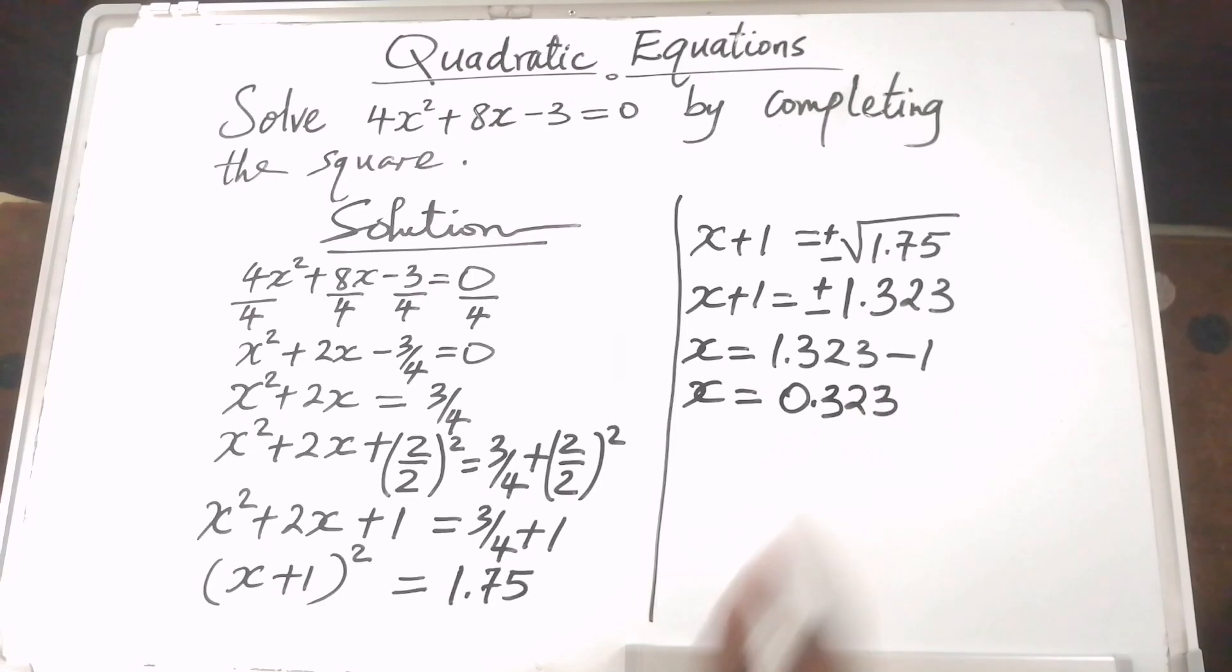That is one of the values of x. So x is 0.323, or x will be equal to the negative value, which is minus 1.323 minus 1. That gives us the other value of x, which is minus 2.323.